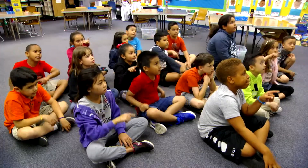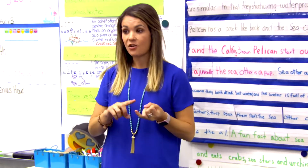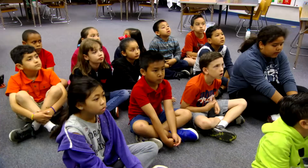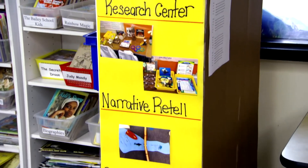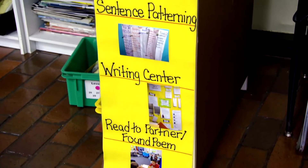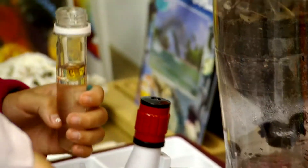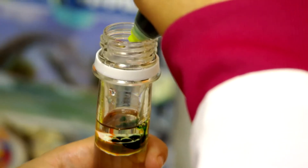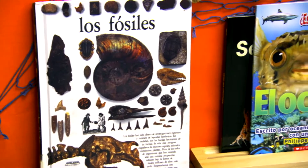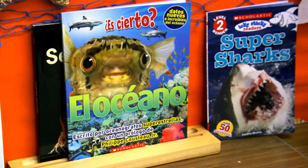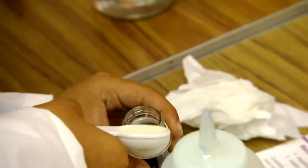So what we're going to do next, we're going to start our Daily Five. We have our researcher center, our narrative retell, sentence patterning, the writing center, found poem, and read to a partner. In this classroom, the Daily Five were choice centers for students, each involving writing, inquiry, and reading related to the content — building literacy skills. The research center involved mixing oil and water and doing further inquiry into oil spills affecting the ocean ecosystem. Students have wonderful sets of books available to read and understand why oil affects the ocean, making it an inquiry center involving hands-on reading and discussion.